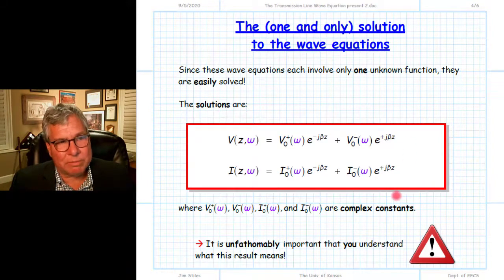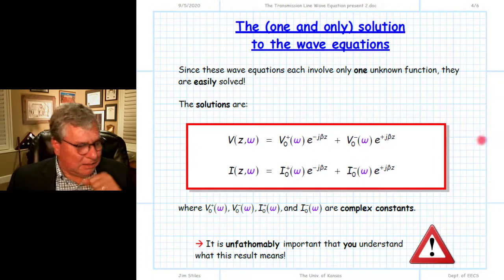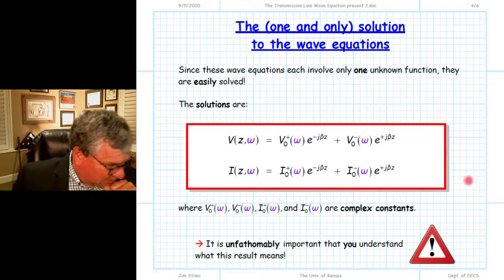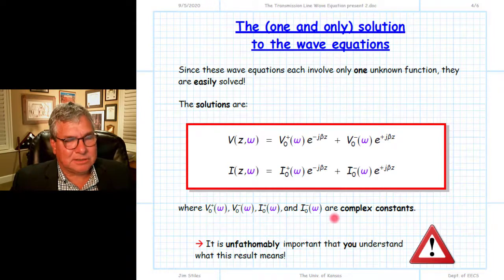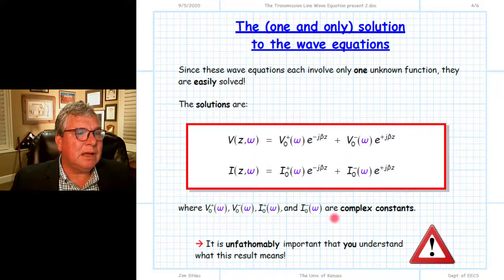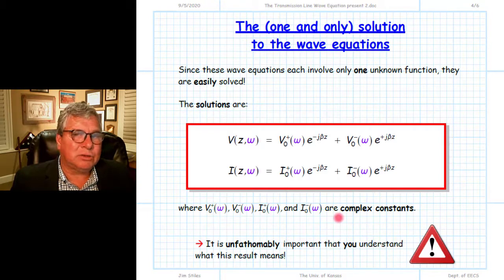And certainly the value of these complex constants will be different as well. These four complex constants are called the wave amplitudes of the solution. They are constant with respect to position Z — obviously they change when we change the frequency omega, but with respect to position Z, these are four constants.